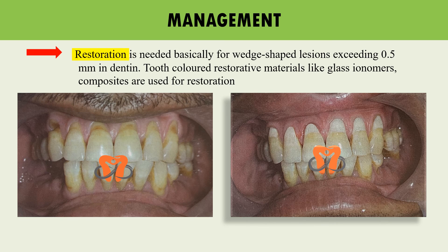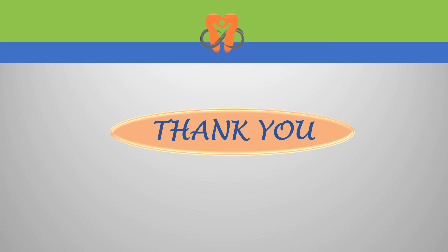Restoration is needed for V-shaped lesions exceeding 0.5 mm in dentine, using tooth-colored restorative materials like glass ionomer or composites. All data in this presentation has been taken from the Textbook of Operative Dentistry written by the presenter — the link is provided in the description below. Please like, share, and subscribe, and check out the videos on management of deep carious lesions and principles of inlay cavity preparation.